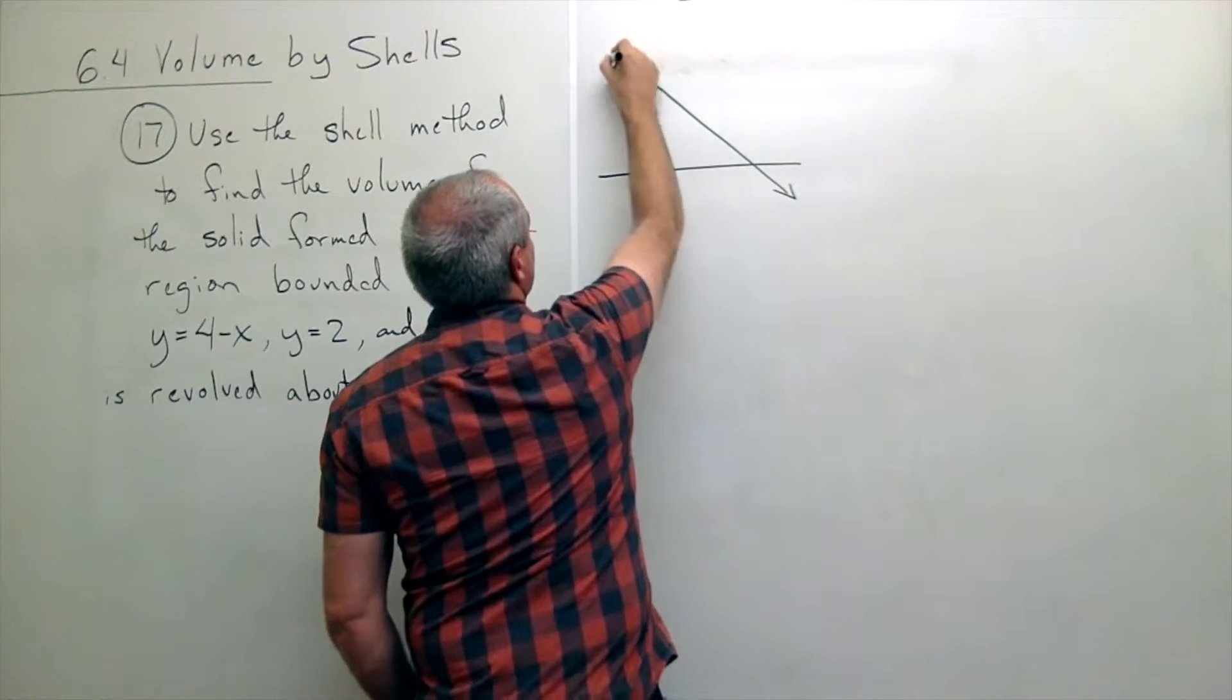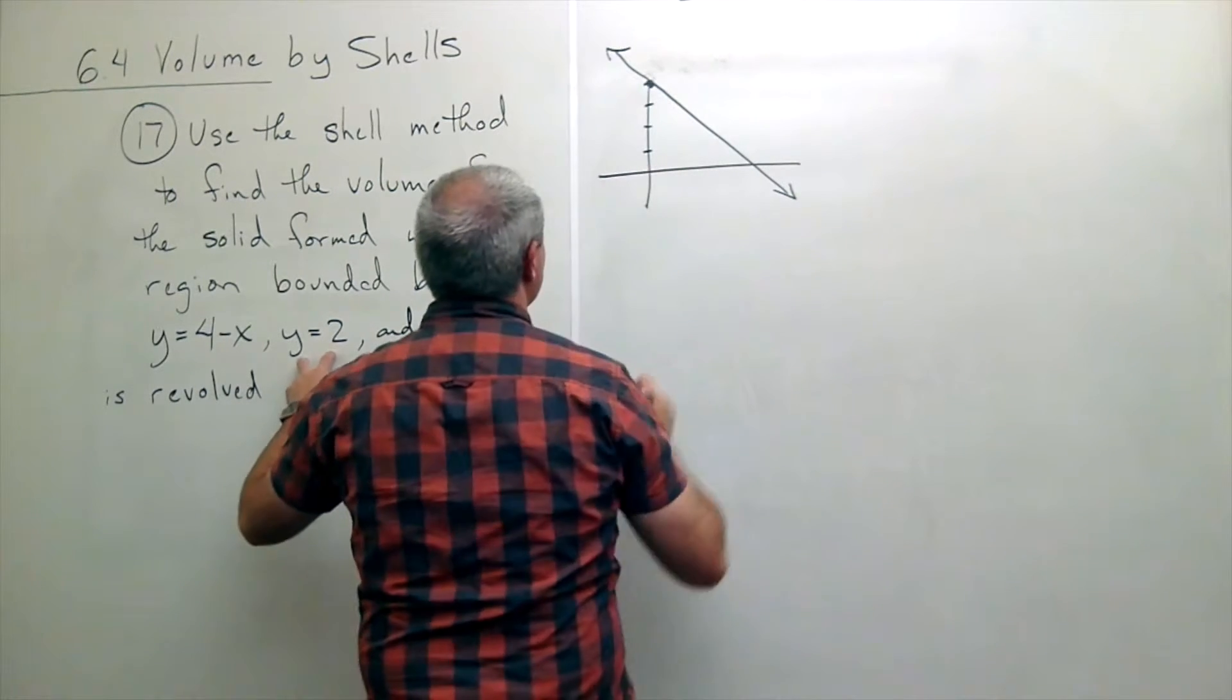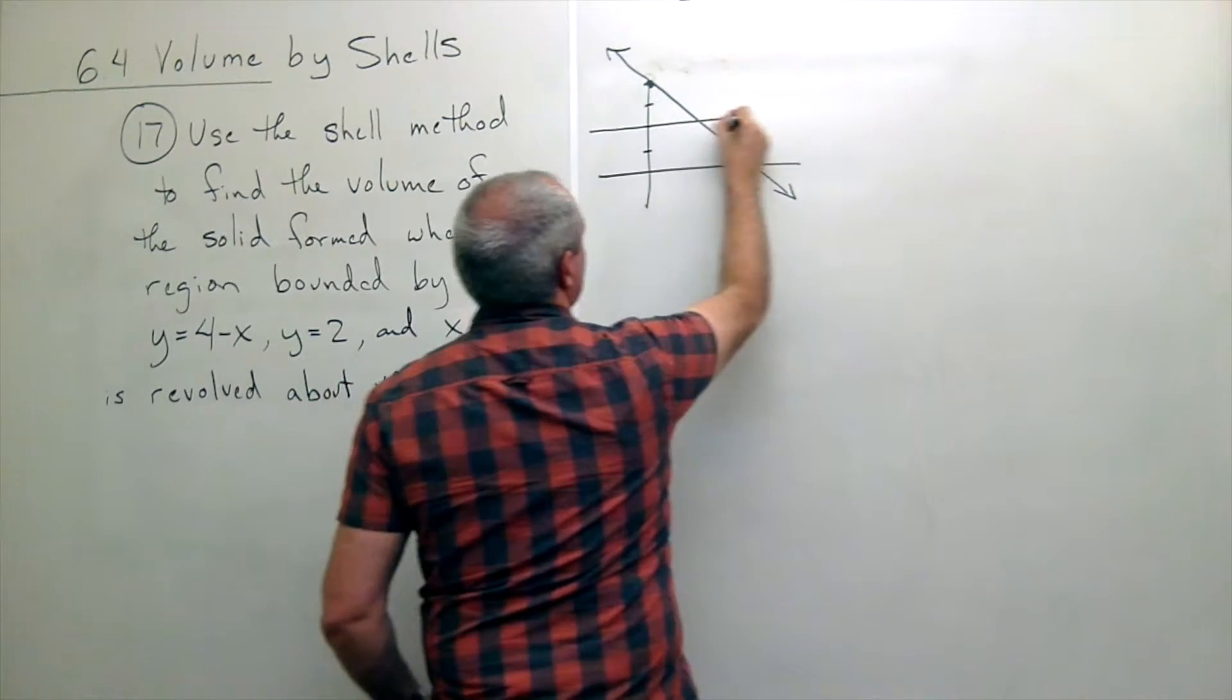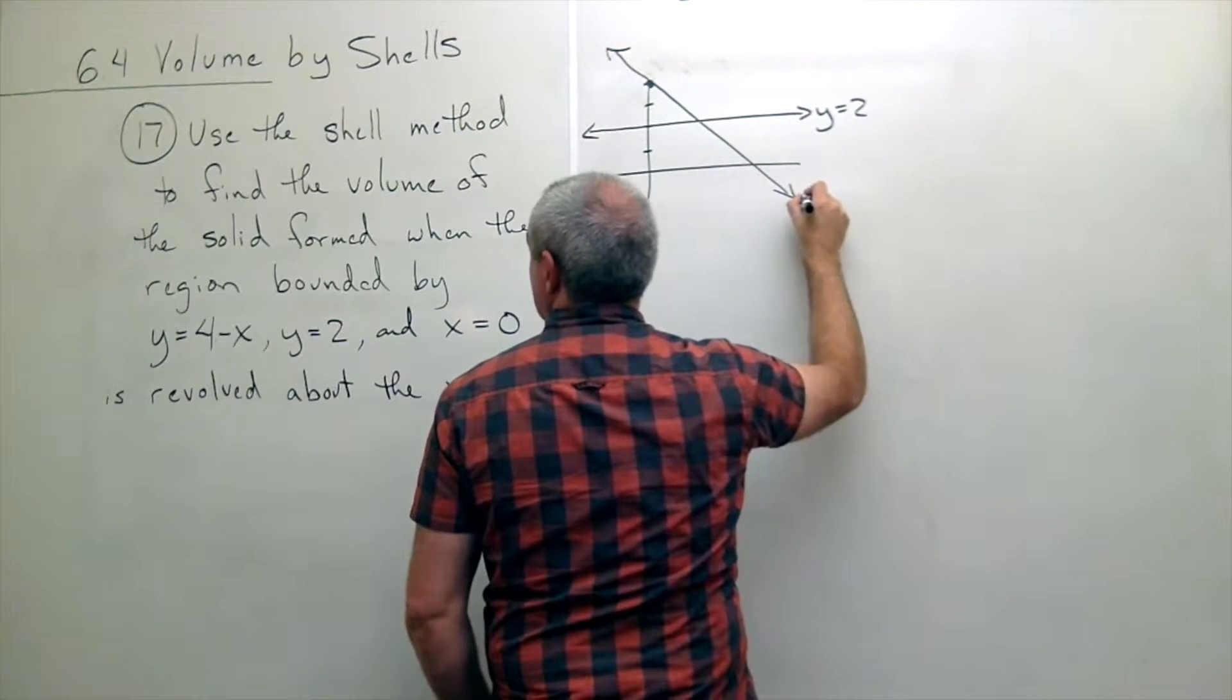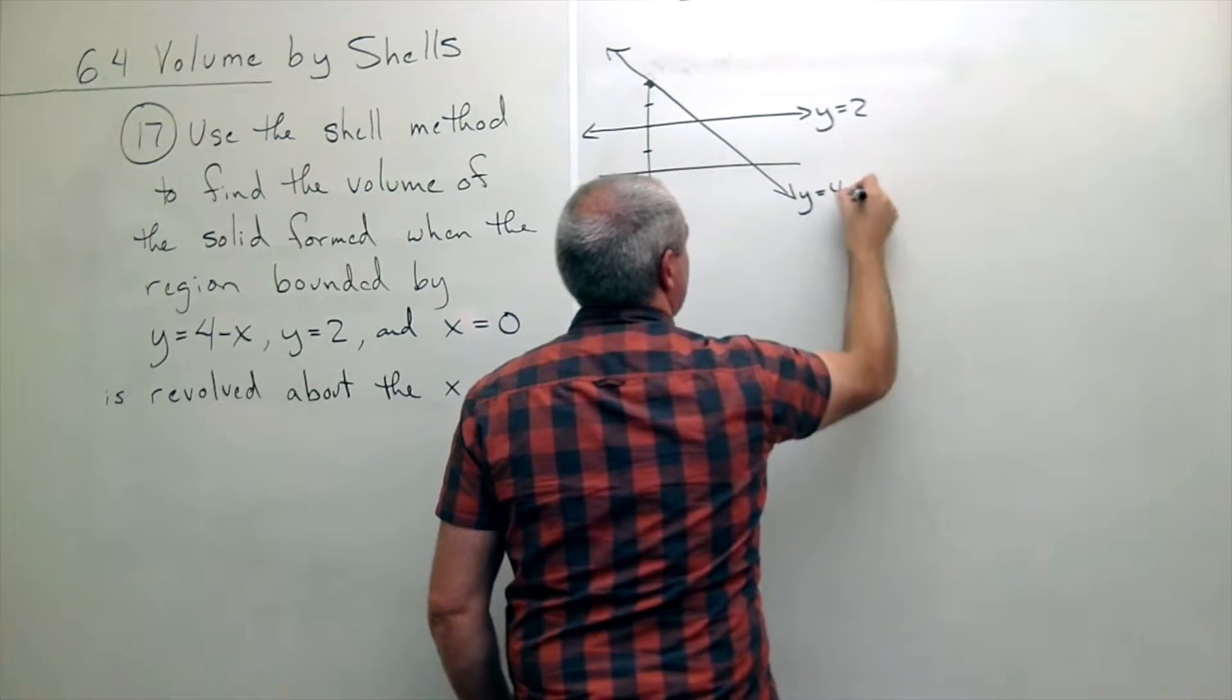and then we get y equals two, which is this line. This is y equals two, this is y equals four minus x,